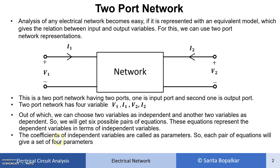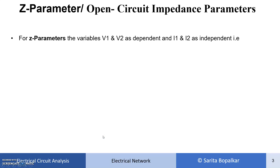The coefficients of the independent variables in these equations are called parameters, and each pair of equations gives different parameters. The first parameter type is the Z parameter, also called the open circuit impedance parameter.